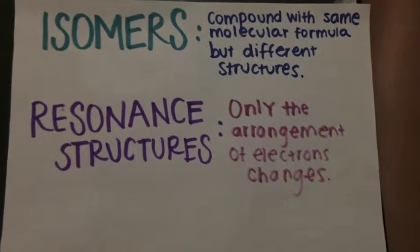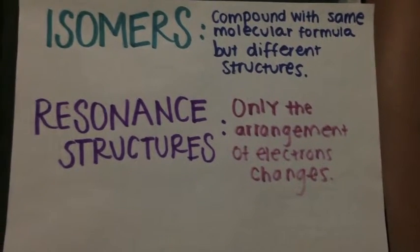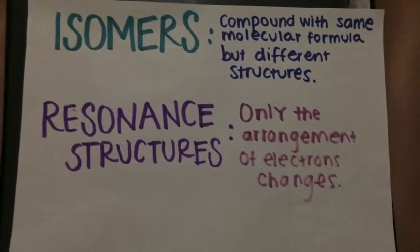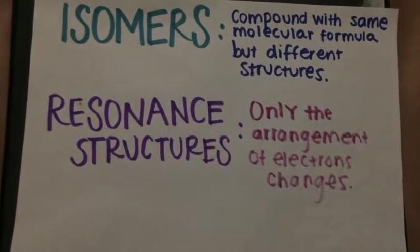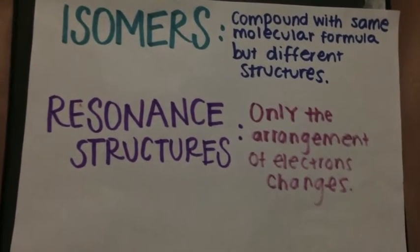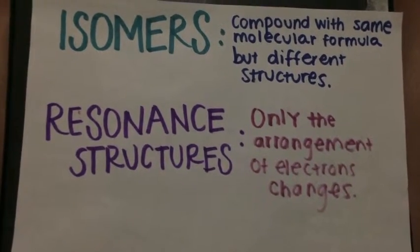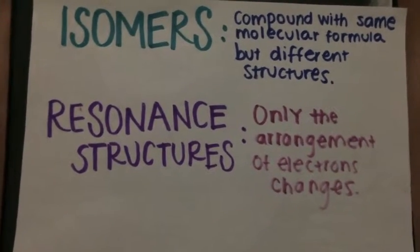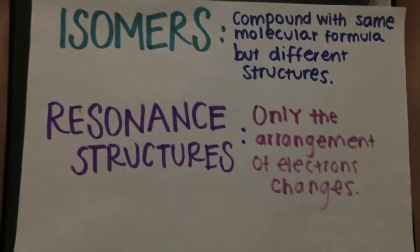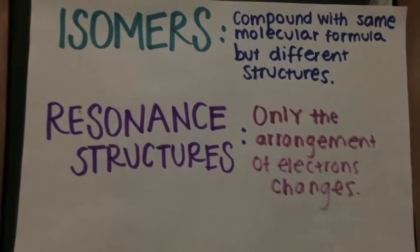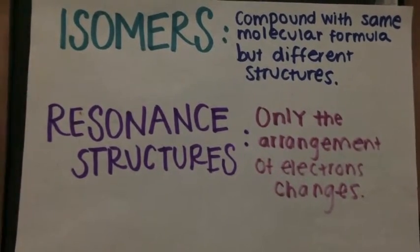This video is about isomers and resonance structures. Isomers are compounds with the same molecular formula but different structures, and resonance structures only vary in the arrangement of electrons.